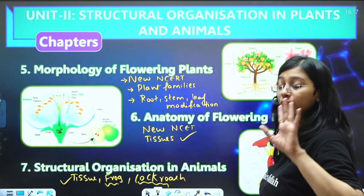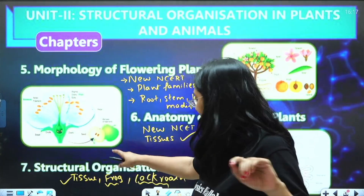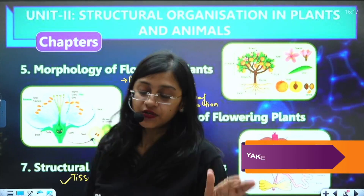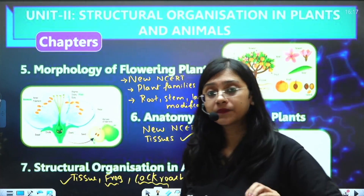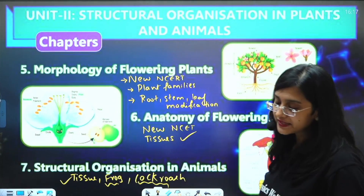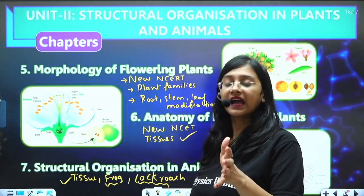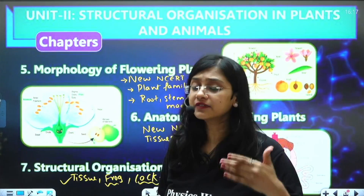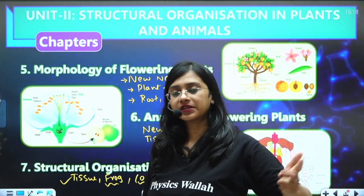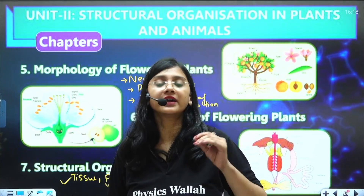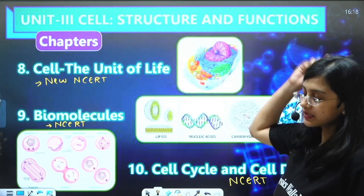For Structural Organization in Animals, study animal tissues and skip earthworm, but cover frog and cockroach. Since the digestion and absorption chapter has been deleted from 2024, you won't have background knowledge on digestion and absorption. Therefore, revise Life Processes from Class 10, which covers digestion, absorption, excretion, and transportation — this will help you better understand frog and cockroach anatomy and morphology.